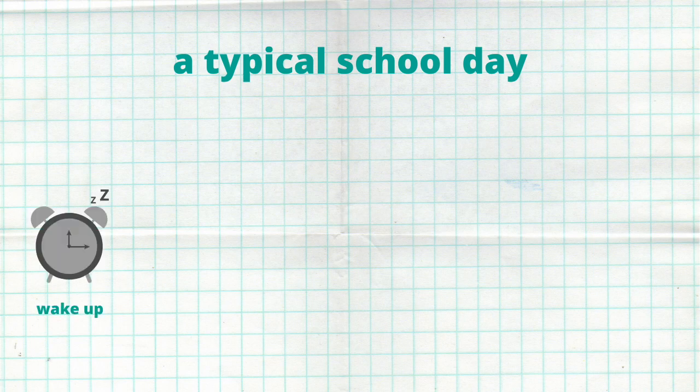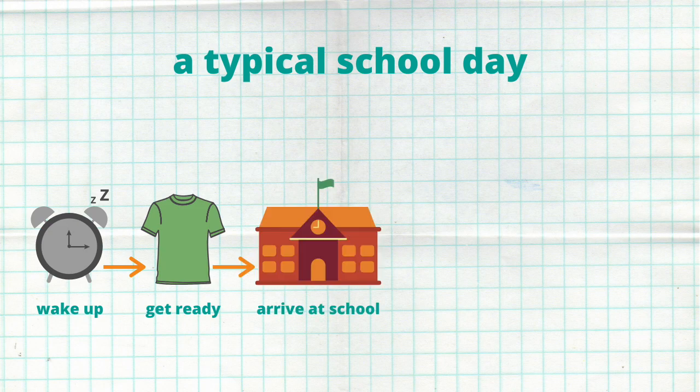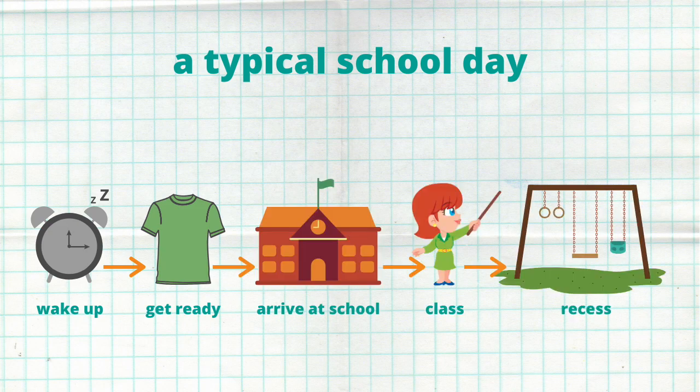Think about a typical school day. Things happen in an ordered sequence. First, you wake up in the morning, then you get ready for school, you arrive at school, you go to class, you go to recess, and so forth. Let's say, as a general rule, your school always has recess outside.